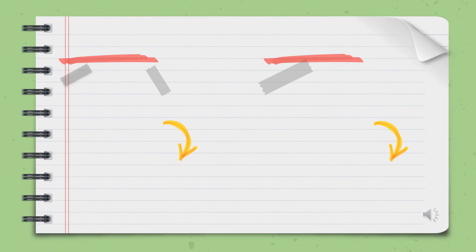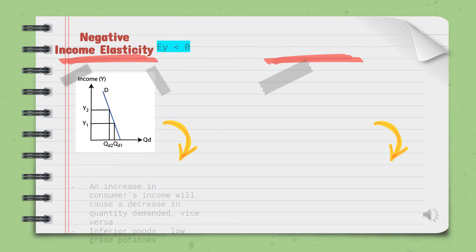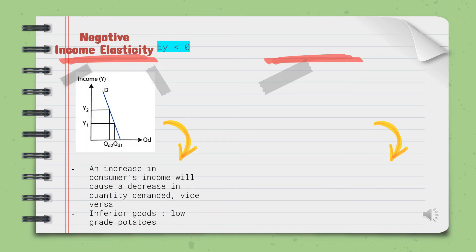Moving on to negative income elasticity, the type of goods here are inferior goods — for instance, low-grade potatoes and broken rice. An increase in income leads to a decrease in quantity demanded. The value will be less than 0, or negative.